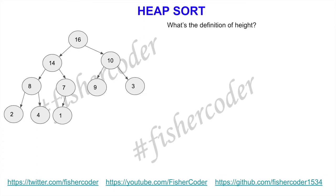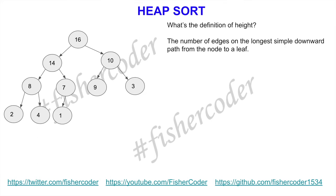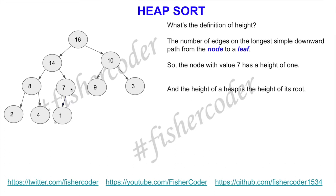Now let's talk about the definition of the height of a binary tree or heap. We define height as the number of edges on the longest simple downward path from the node to a leaf. For example, the node with value 7 has a height of 1 because there is only one edge between it and the next leaf. The height of a heap is defined as the height of its root.